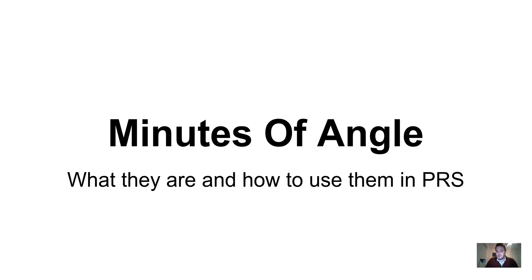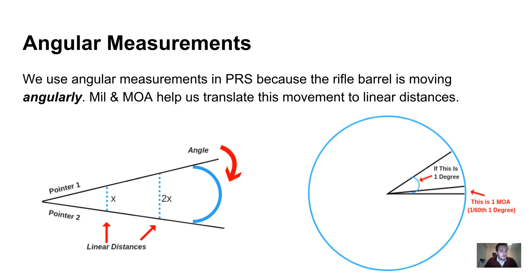Let's talk about angular measurements or review it in case you didn't watch yesterday's video. We use angular measurements in precision rifle shooting because when you're moving the barrel, you're moving it in an angular fashion, not linearly. That poses a problem when you're trying to measure how far that movement actually means when you're looking at a target.